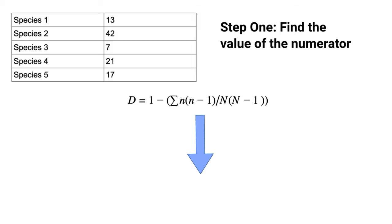The easiest way to break this down is imagining that the numerator, n times n minus one, is its own equation. You need to input the population values for each species and then find the sum of each of these values.